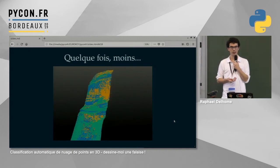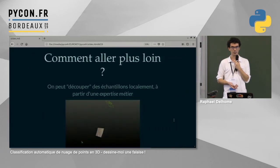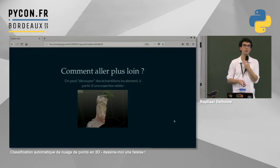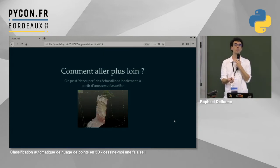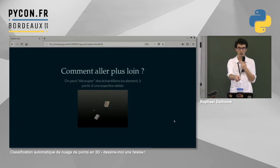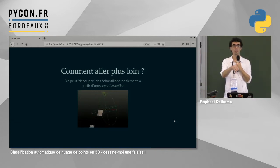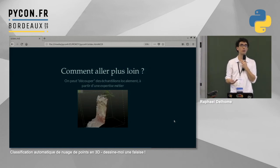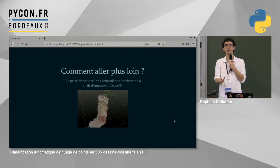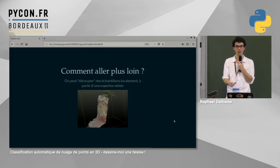On s'est dit : on connaît quand même notre donnée. On sait globalement qu'en haut c'est de la végétation, au milieu de la falaise, en bas de l'ébouli. On peut donc utiliser le logiciel de visualisation 3D pour découper des échantillons et annoter manuellement des zones dont on connaît la classe. On se constitue ainsi un jeu d'entraînement de qualité passable mais suffisant pour aller plus loin que le clustering. On avait une trentaine d'échantillons représentant 2,5 millions de points.